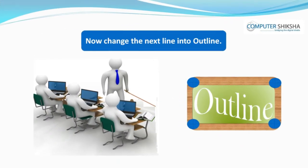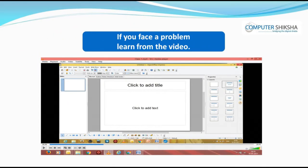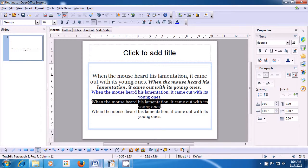Now, change the next line into outline. If you face a problem, learn from the video. Let us now practice applying the outline on selected text. First, select the line where you want to apply the outline. With outline, the characters appear only in outline form — there is no solid fill color inside. Having selected the line, take your pointer to the Format menu of the menu bar and left-click.